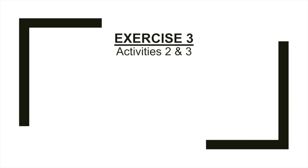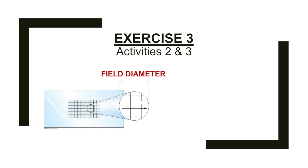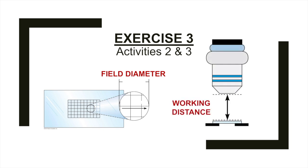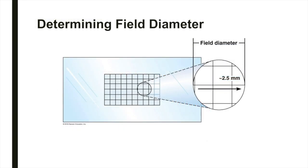In exercise three, activity two, you'll view the letter E slide through the microscope and fill out information about your microscope's field — the area that you see through the microscope — and working distance, the area between the bottom of the objective lens and the surface of the slide. In exercise three, activity three, you'll be determining the field diameter for each objective lens. In order to determine the diameter of the scanning and low power fields, you'll place a grid slide under the microscope and count the number of one millimeter squares that span the field of view. Because we are measuring at the microscopic level, we'll be working in millimeters and micrometers.